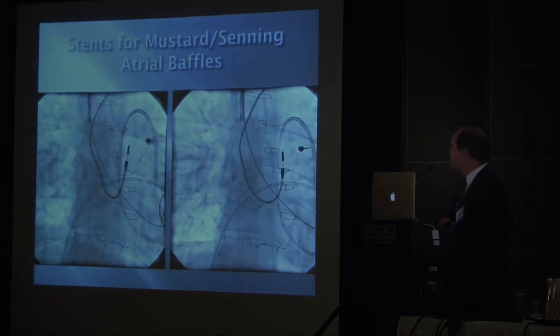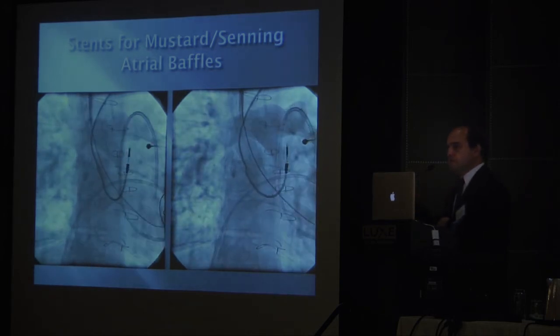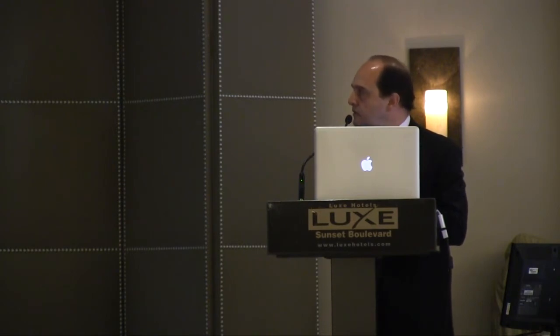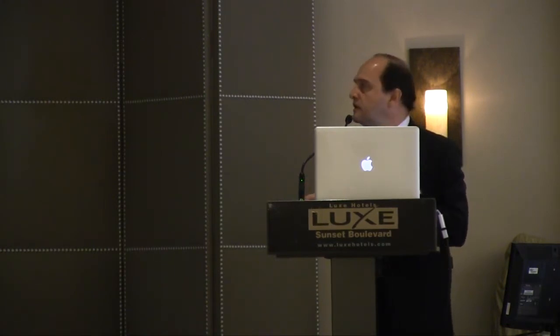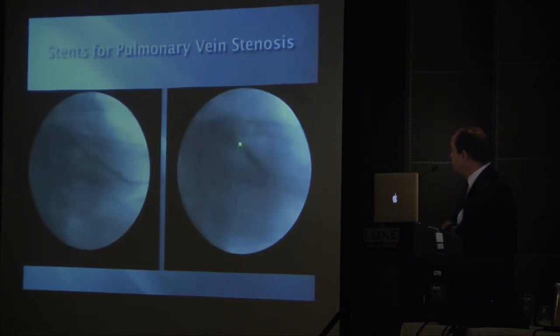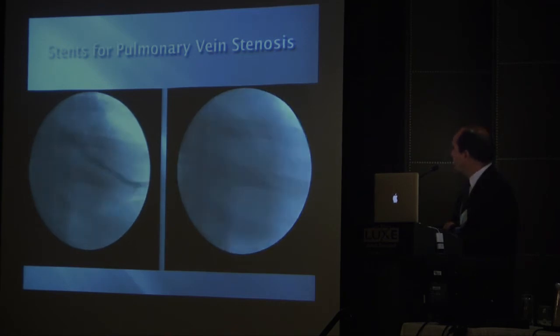We've also done stents to relieve pulmonary venous baffle obstructions — that's a little bit more tricky, and it requires a stent placed retrograde through the aorta. This is a patient with a pulmonary vein obstruction. Pulmonary vein obstructions have been very tricky — just dilating them often doesn't work, and sometimes putting in stents doesn't work either. But this is an example of a patient in whom a stent in the left pulmonary vein resulted in long-term relief. The best setting is when it's a very discrete obstruction.